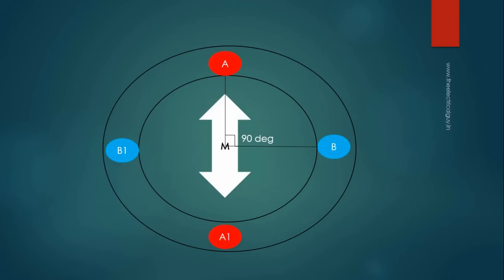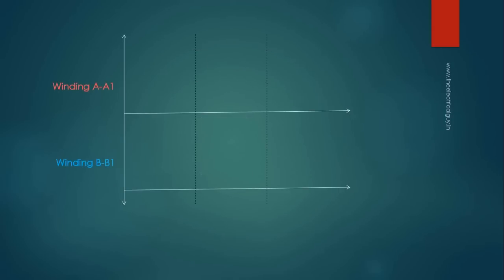The interesting part of this arrangement is that when the magnet is in the position shown, voltage across winding A, A1 is maximum or we can say it is at its peak. And voltage across winding B, B1 is almost zero. This is because the flux only cuts across the terminal in slot A and A1 at this instance.